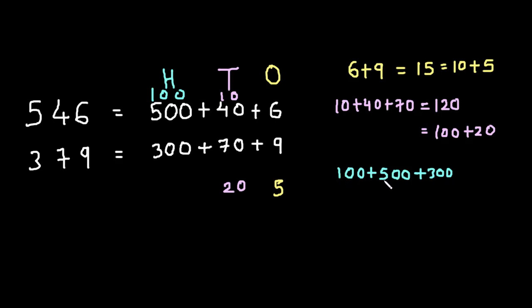100 plus 500 plus 300. So, we have 1 plus 5, 6, 6 plus 3, 9. In total 900. So, we will write 900.